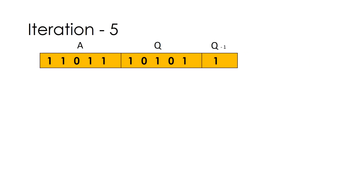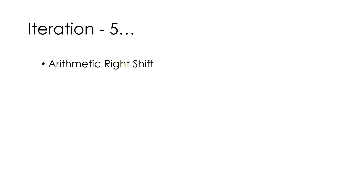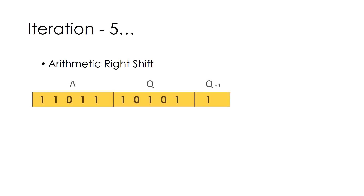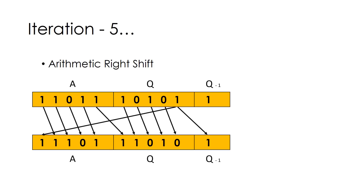Here is the final fifth iteration. We check the last bits of Q and Q minus 1, and these are 1 and 1, meaning we need not perform any operation — we just perform the arithmetic right shift. The values of A, Q, and Q minus 1 remain as in the row above before the shift. The row below contains the new values of A, Q, and Q minus 1 after the arithmetic right shift.